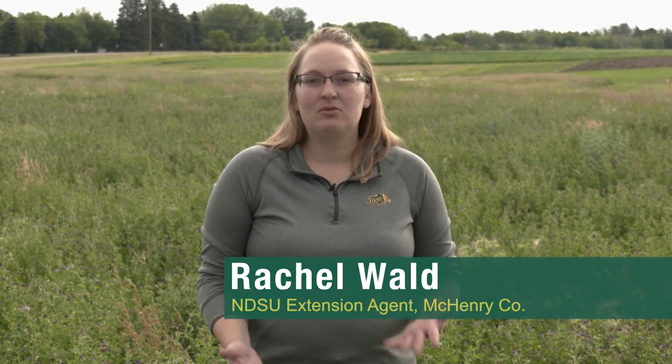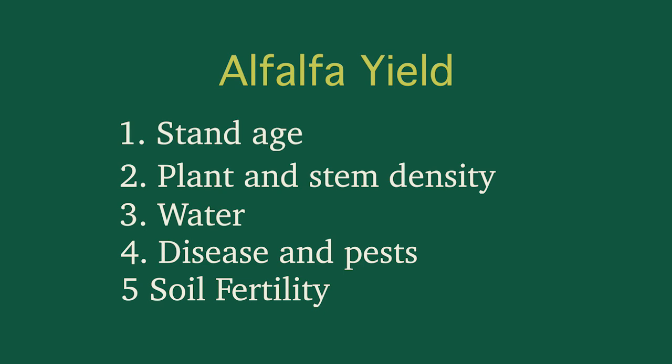One thing I talk to a lot of producers about is what affects your alfalfa yield. There are five different items that affect alfalfa yields: stand age, plant stem density, water, disease or pests, and soil fertility. Today we're going to talk about soil fertility in an alfalfa stand.